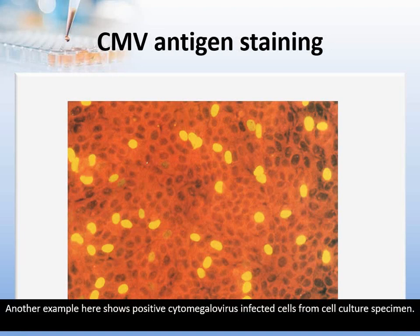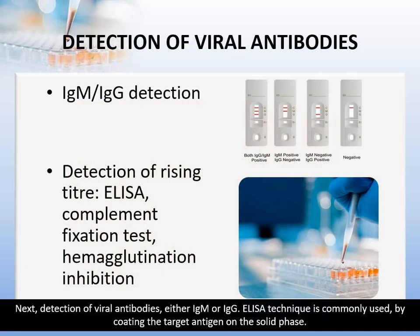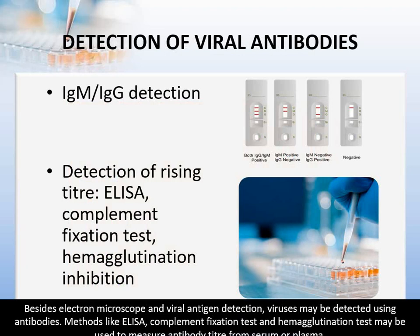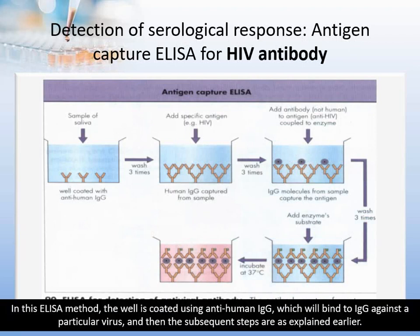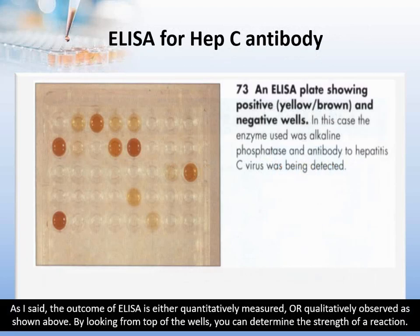Another example shows positive cytomegalovirus-infected cells from cell culture specimen. Next, detection of viral antibodies, either IgM or IgG. ELISA techniques are commonly used by coating the target antigen on the solid phase. Methods like ELISA, complement fixation test, and hemagglutination test may be used to measure antibody titer from serum or plasma. In this ELISA method, the well is coated using anti-human IgG, which will bind to IgG against a particular virus, and the subsequent steps are as explained earlier. The outcome of ELISA is either quantitatively measured or qualitatively observed.